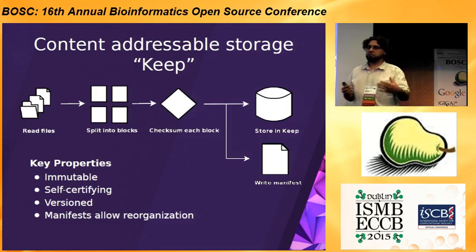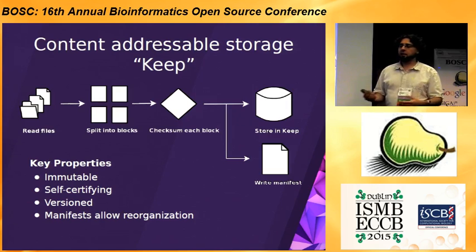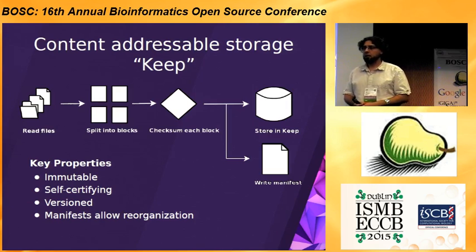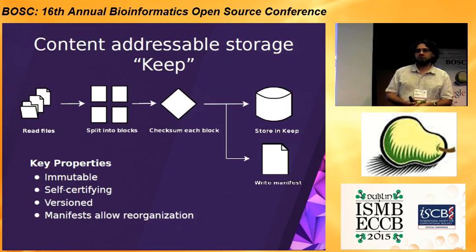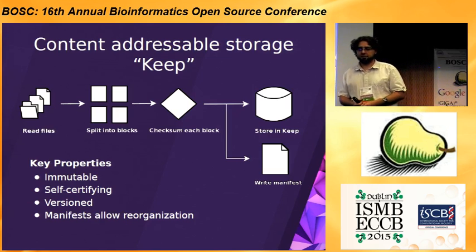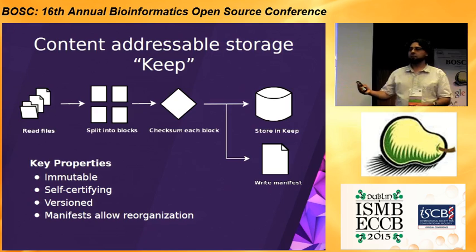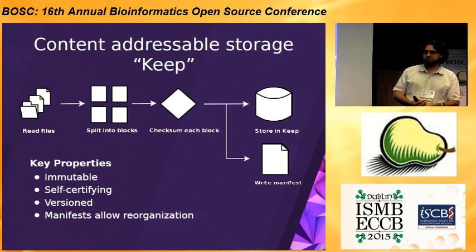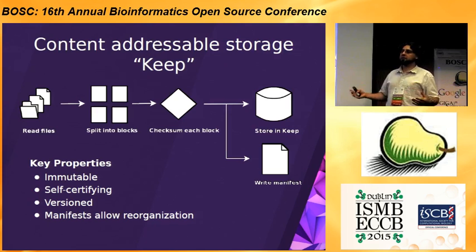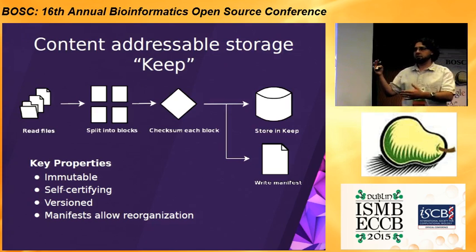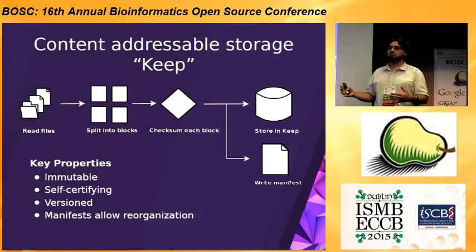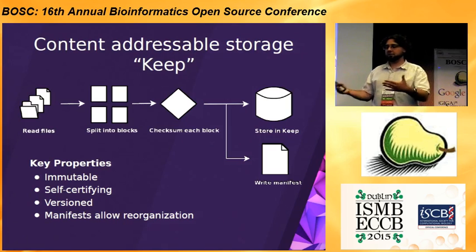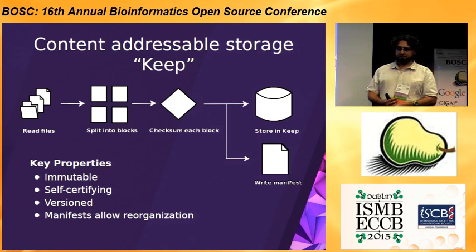This also has the property of being self-certifying, which means that when data is retrieved from the system, because you can run your checksum and hashing algorithm on it, you can validate that the data you received is in fact the data that should be associated with that identifier. So if there's corruption or just mistakes in the handling, that can be detected automatically. A third advantage is it makes versioning much easier — because when the content of the data changes, you now have a new identifier, and every identifier can be associated with a different version of the data.